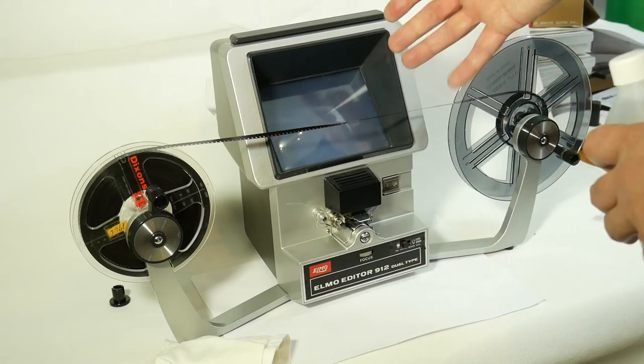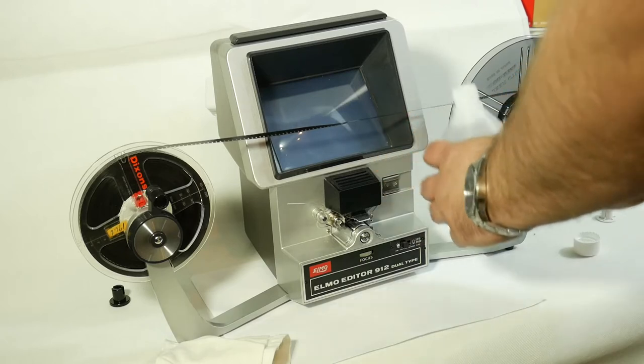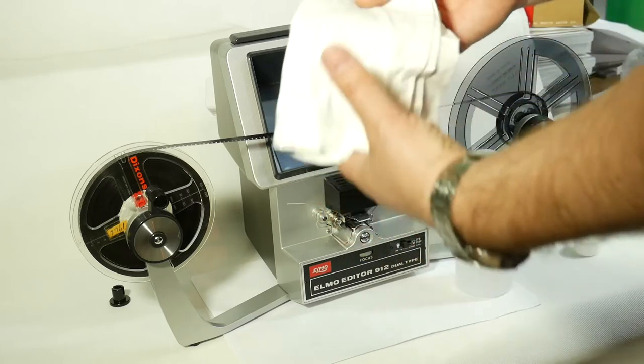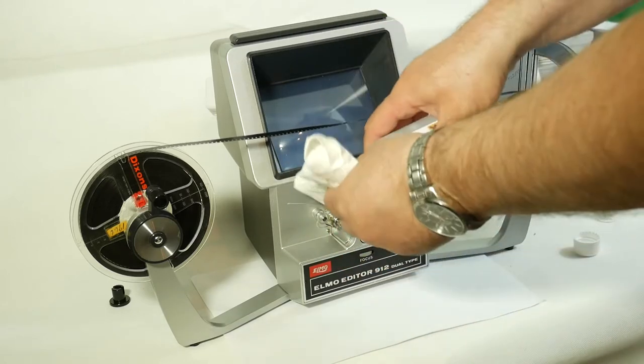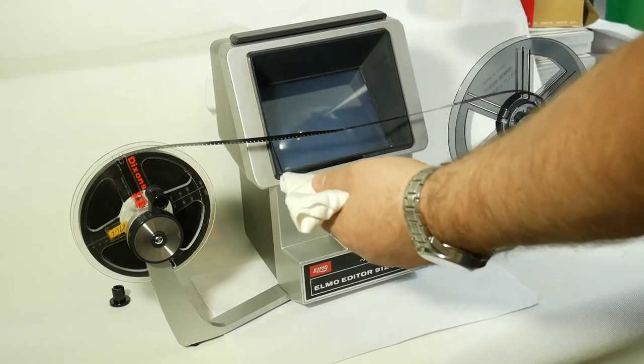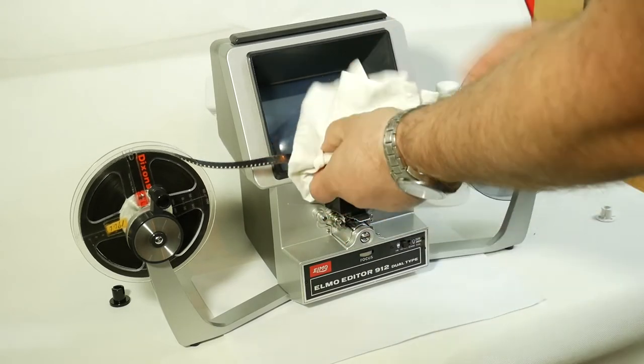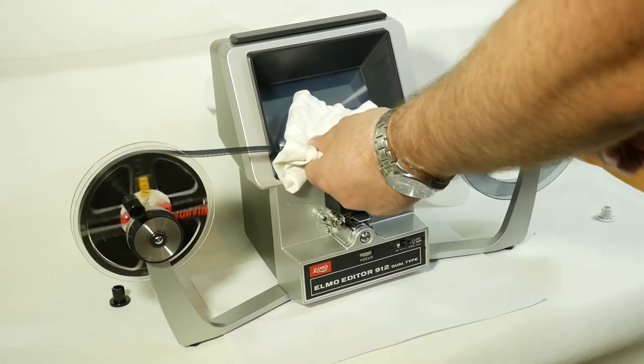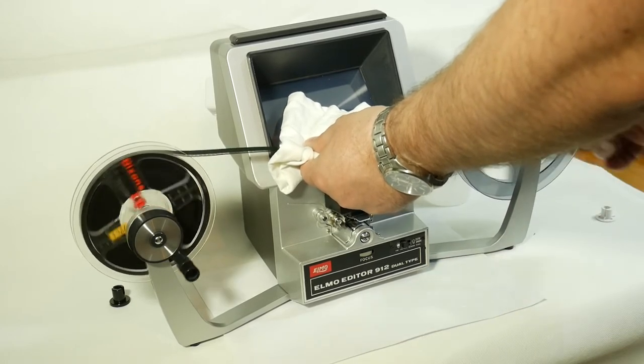You can use a Cinefilm editor like this to clean your films. Just take the top off the bottle, get a soft white cloth or a handkerchief that's been washed lots of times, pour some onto the cloth, pop the cap back on, and just fold the cloth over the film and gently wind the film onto the take-up spool like so.